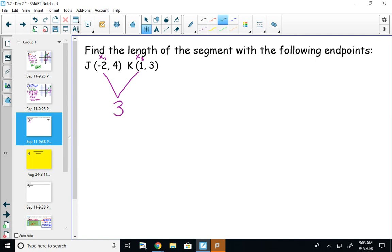And then I'm going to find the distance between my y's. So the distance between 4 and 3 is just going to be 1. And then I'm going to square those, add them together, and take the square root. So 3 squared is 9, 1 squared is 1, square root of 10 is going to be our answer. As a decimal, that is about 3.16 units.